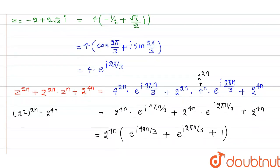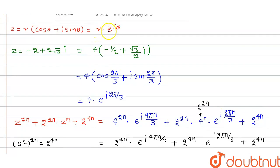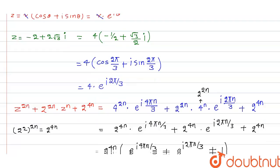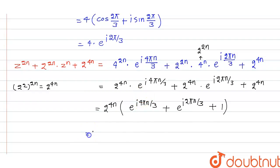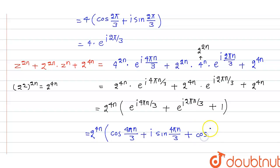Using Euler's formula, e^(iθ) = cos θ + iota·sin θ. So the expression becomes 2^(4n) into [cos(4πn/3) + iota·sin(4πn/3) + cos(2πn/3) + iota·sin(2πn/3) + 1].